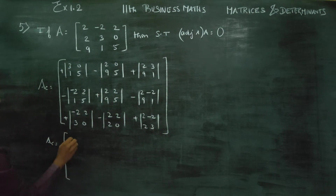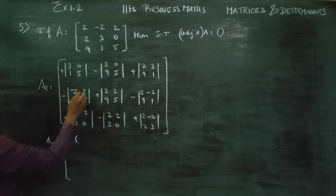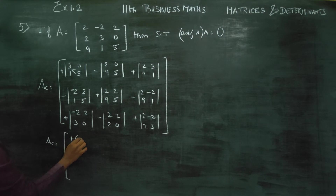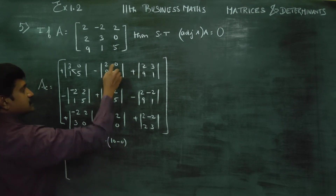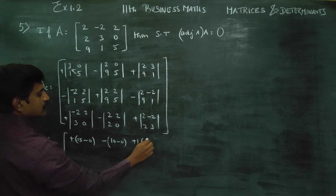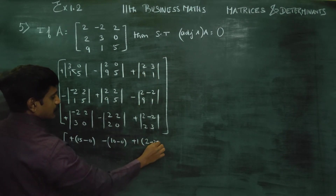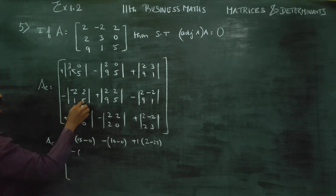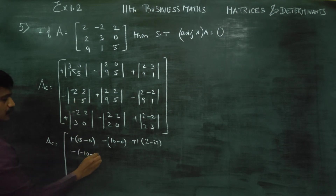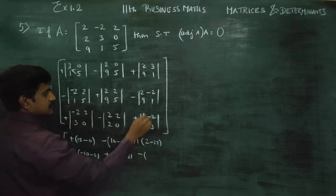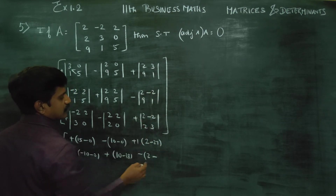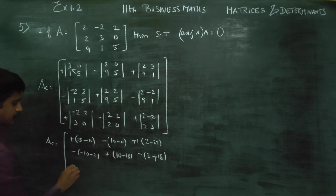AC is equal to: plus right-hand side, right-hand side minus left-hand side. 5×3 is 15 minus 1×0 is 0. That's why minus 5×2 is 10 minus 0, plus 1×2 is 2 minus 9×3 is 27. Then minus, minus 10 minus 1×2 is 2, plus 5×2 is 10, minus 4. Then 0 into 0 is 0, minus 3×2 is 6.